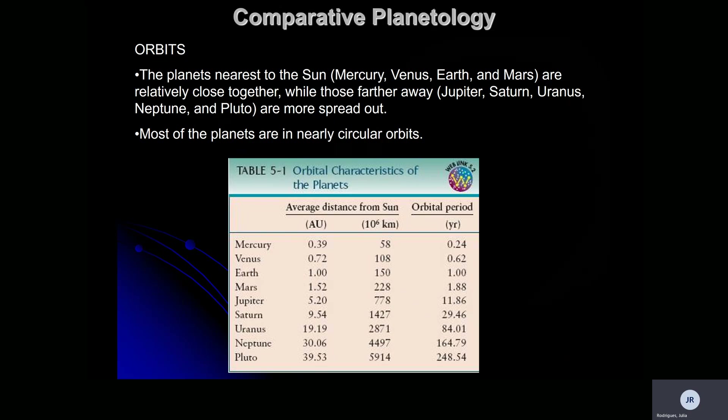Comparing planet orbits: the planets nearest the sun — Mercury, Venus, Earth, and Mars — are relatively close together in their orbits. Our Jovian gas planets are more spread out and not as close to each other. Most of the planets orbit in nearly circular paths and on the same plane, as we saw earlier.